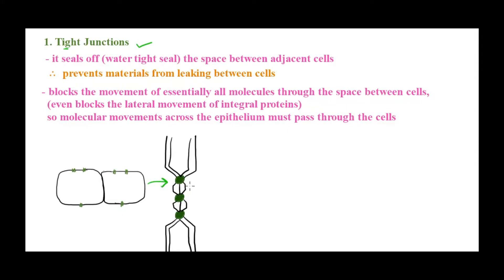If you look at these epithelial cells, there is absolutely no space between them — their plasma membranes are almost fused together. In the side view, tight junctions literally stitch both neighboring cell plasma membranes together with no space in between. It is a watertight seal, and because of that it prevents any material from passing through the space between cells. Any molecule, water molecule, ions, or anything that has to pass from one side of the epithelial sheet to the other must pass through the cell.